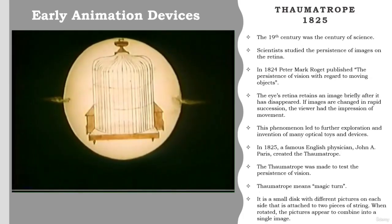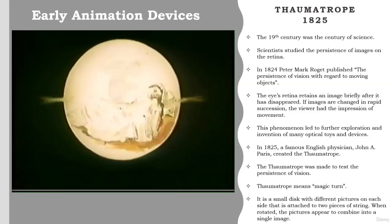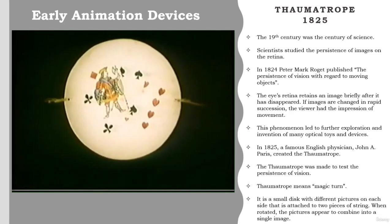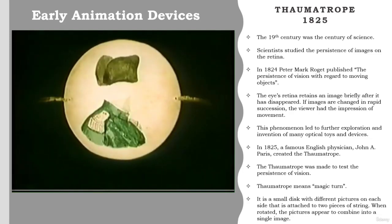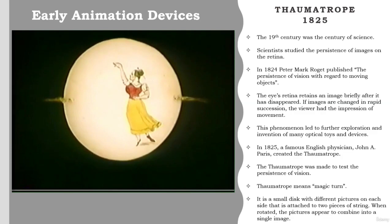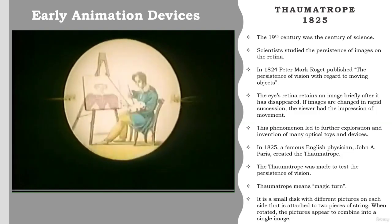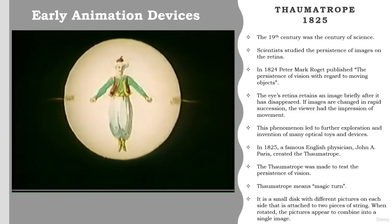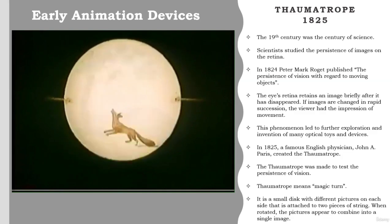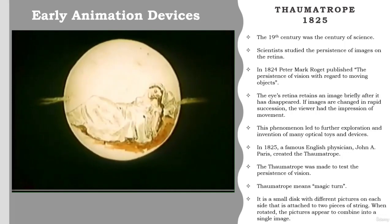The 19th century was the century of science. Scientists studied the persistence of images on the retina. In 1824, Peter Mark Roget published the persistence of vision with regard to moving objects. As Roget explained, the eye's retina retains an image briefly after it has disappeared, which means that if images are changed in rapid succession, the viewer has the impression of movement. This phenomenon led to further exploration and the invention of many optical toys and devices. Although the theory of persistence of vision as the main reason we see film as motion has been disproved since 1912, film historians continue mentioning the theory in many historical references.